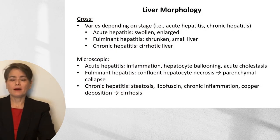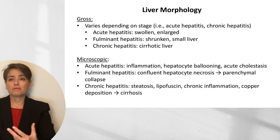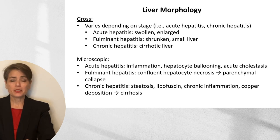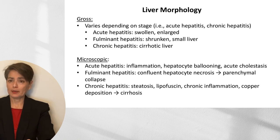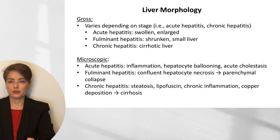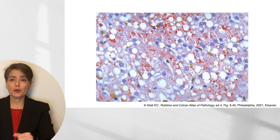The liver's appearance varies by stage. In acute hepatitis, it is swollen and enlarged; fulminant hepatitis causes massive necrosis and a shrunken liver; chronic hepatitis leads to cirrhosis. Microscopically, acute hepatitis shows inflammation, hepatocyte ballooning, and cholestasis; fulminant hepatitis shows confluent necrosis with parenchymal collapse; chronic hepatitis shows steatosis, lipofuscin deposition, chronic inflammation, and copper detectable by special stains, progressing to cirrhosis.